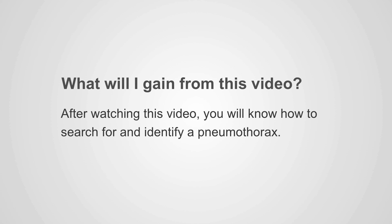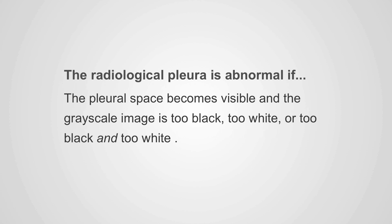After watching this video, you'll know how to search for and identify pneumothorax. The radiological pleura is abnormal if the pleural space becomes visible and the grayscale image is too black, too white, or too black and too white in combination.